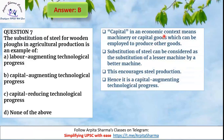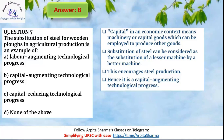Capital in an economic context means machinery or capital goods that can be employed to produce other goods. Substituting steel for wooden plows is a substitution of a lesser machine by a better machine. This encourages steel production and moves toward better capital goods. Hence, it is a capital augmenting technological process — your capital is strengthening as you change towards better machinery.